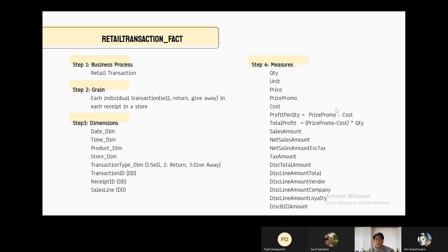We select three degenerate dimensions: transaction ID, receipt ID, and sale line. Transaction ID is used to track the transaction of each product. Receipt ID helps identify which receipt the transaction belongs to. And lastly, sale line points to which line the product is presented on the receipt.